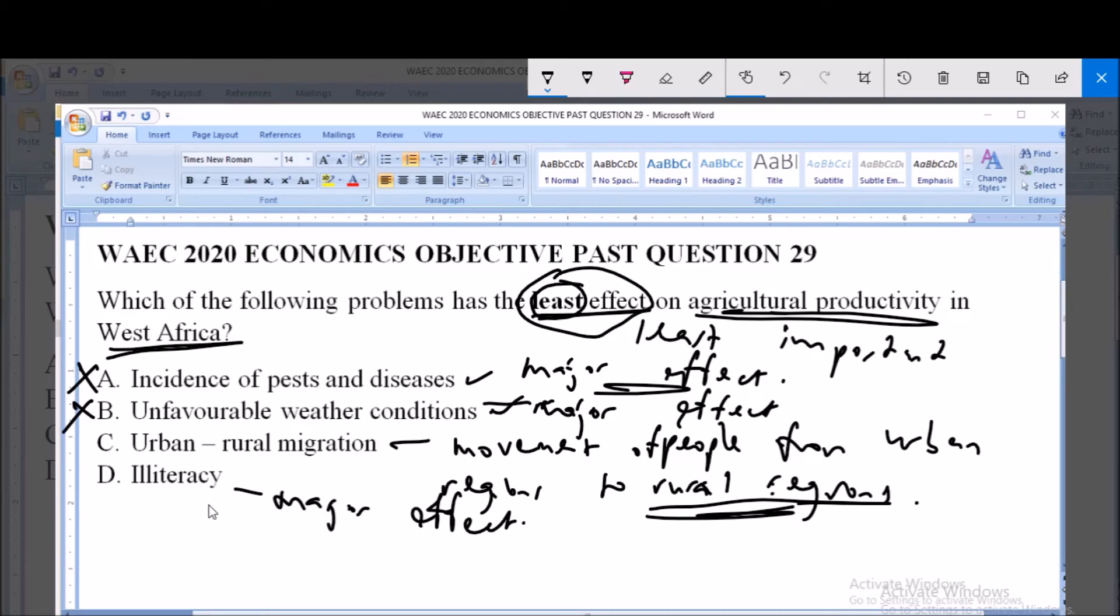Lack of technical know-how, use of mechanized farming, use of methods of pest and disease control is a major effect. So it is not the answer to the question.